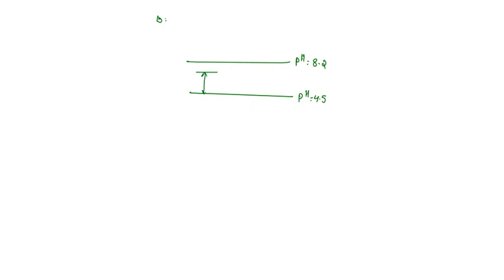For sample B, between pH 8.2 and pH 4.5, total alkalinity is 127 mg per litre and phenolphthalein alkalinity is 0. Since it lies in the region where alkalinity is due to bicarbonate only, in sample B only bicarbonate alkalinity exists, which is equal to 127 mg per litre.